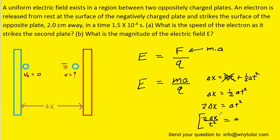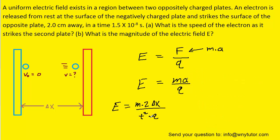So we can take this expression for the acceleration of the electron and plug it into A of our electric field equation. Once we have this expression, we can substitute in the known values for the mass of the electron, the displacement, the time, and then the charge.